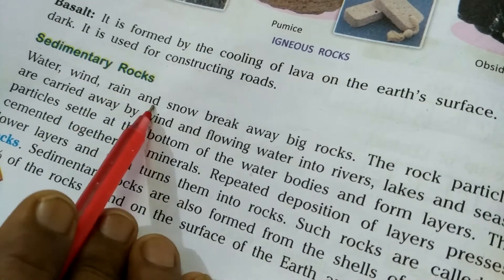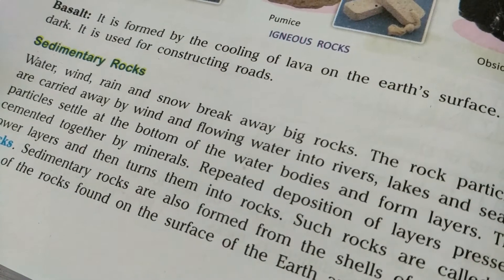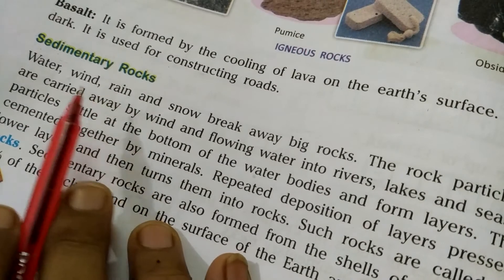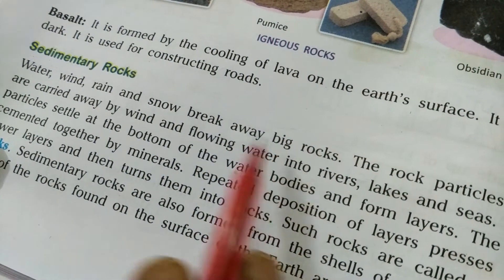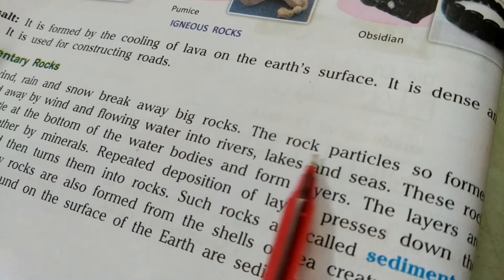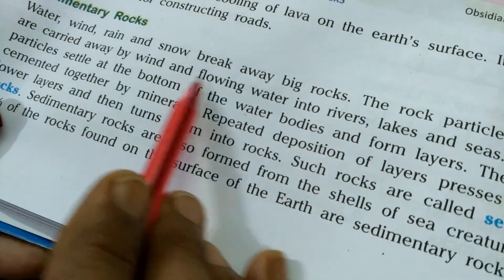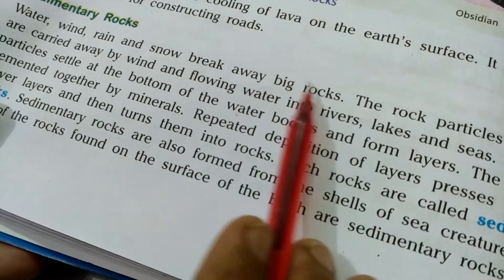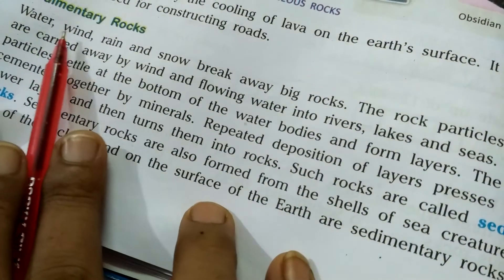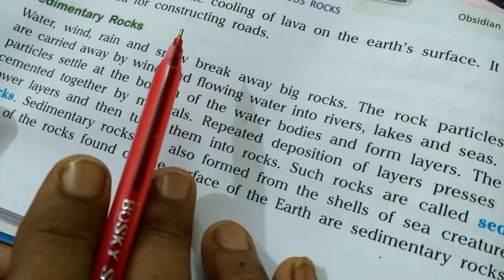Water, wind, rain and snow break away big rocks — we have studied this in the soil chapter also. Due to the effect of water, wind, rain and snow, big rocks get broken down into rock particles. These rock particles are carried away by wind and flowing water into rivers, lakes and seas.